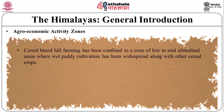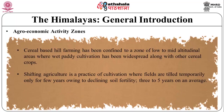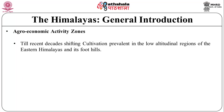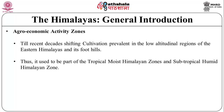Cereal-based hill farming is confined to low to mid-altitudinal areas where wet paddy cultivation has been widespread along with other cereal crops. Shifting agriculture is a practice where fields are tilled temporarily for only a few years — on average 3 to 5 years — owing to declining soil fertility. Subsequently, the agricultural fields are abandoned and a new plot is carved out, while the previous ones are left to revert to natural vegetation. Till recent decades, shifting cultivation was prevalent in the low altitudinal regions of the eastern Himalayas and its foothills, as part of the tropical moist and subtropical humid Himalayan zones.